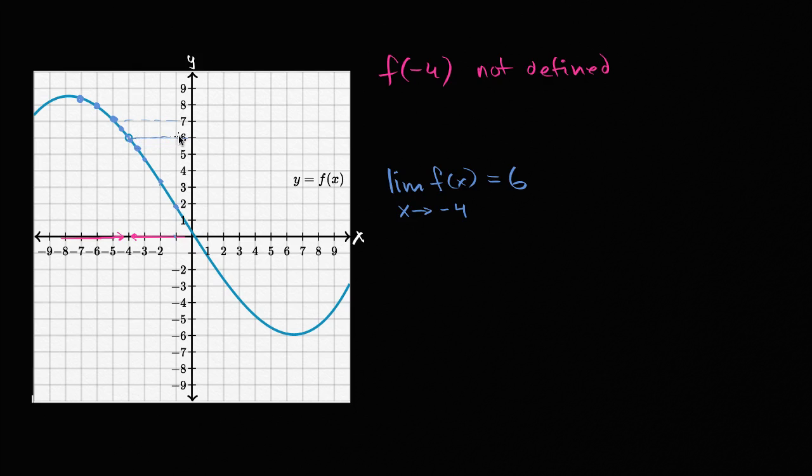It looks like it's getting awfully, it's gonna be a little bit more than six. So it seems as we get closer and closer to six, as we get closer and closer to x equals negative four, the value of our function is approaching positive six.